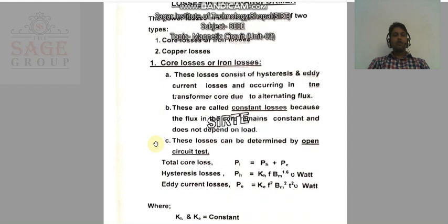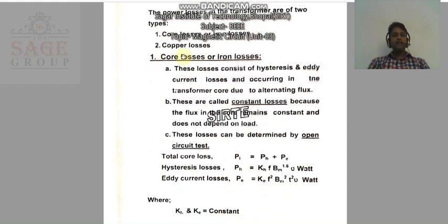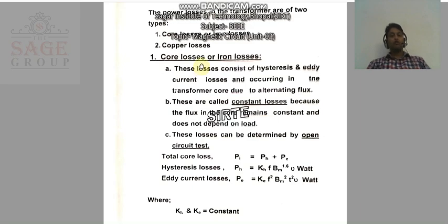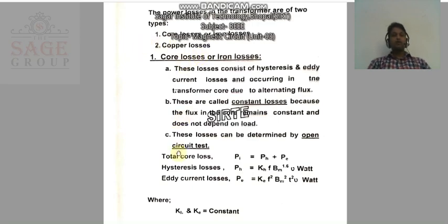Let us start with core loss. As its name suggests, these losses occur in the core of the transformer. Core loss can be further divided into two parts: the first one is hysteresis loss, and the second one is eddy current loss.